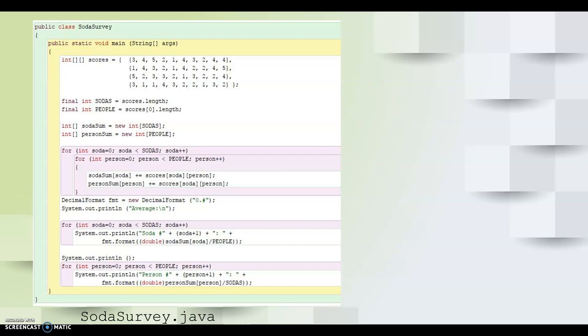Suppose a soda company has a taste test for four new flavors to see how teens like them. The company got ten students to try each new flavor and gave it a score from one to five, where one means gross and five means awesome. The 2D array called scores in the soda survey program stores the results of that survey. Each row is a soda, and each column in that row is the student who tested it or tasted it.